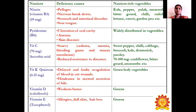Niacin, otherwise called vitamin B3, is found in kale, pepper, amaranthus, bitter gourd, chilies, radish, lettuce, carrots, and garden peas. Deficiency of niacin leads to pellagra, nervous breakdown, and stomach and intestinal disorders.